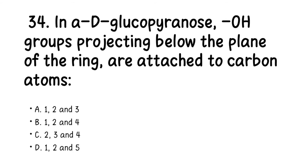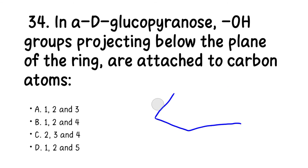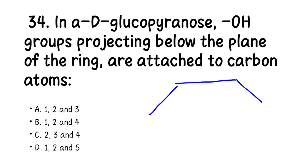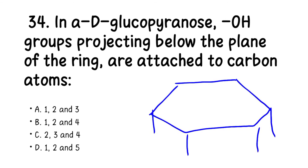Number 34. In alpha-D-glucopyranose, OH groups projecting below the plane of the ring are attached to carbon atoms: A. 1, 2, and 3; B. 1, 2, and 4; C. 2, 3, and 4; D. 1, 2, and 5. If you draw a D-glucopyranose ring, you can see which OH groups project downward. The right answer is B — positions 1, 2, and 4.